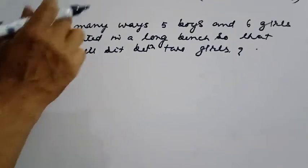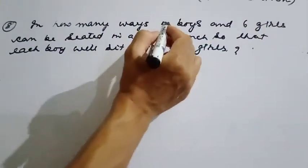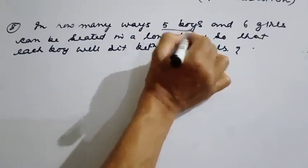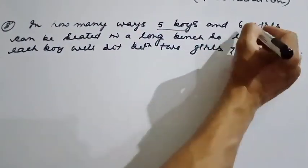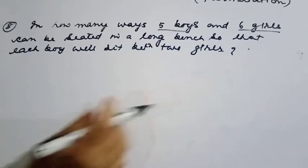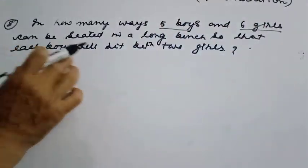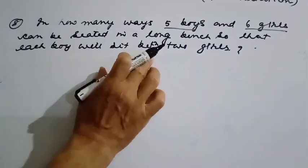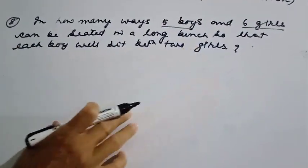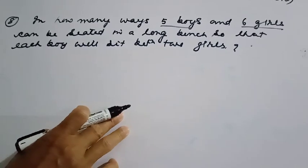In how many ways can five boys and six girls be seated on a long bench so that each boy will be seated between two girls?